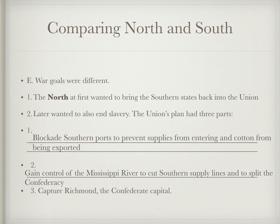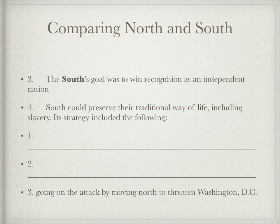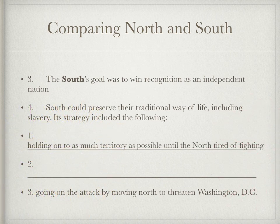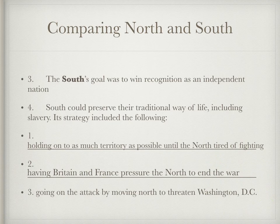The South had one main goal: win recognition as an independent nation — and also preserve their way of life, which includes slavery. They also had a three-part plan. First: hold on to as much territory as possible until the North got tired of fighting. Second: have Great Britain and France pressure the North to end the war. Third: go on the attack by moving North to threaten Washington, D.C. This strategy is very similar to what the American colonies did when fighting Great Britain — they were thinking, it worked then, maybe it could work now.